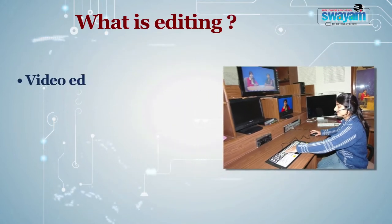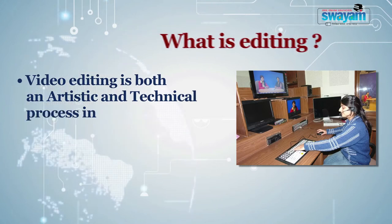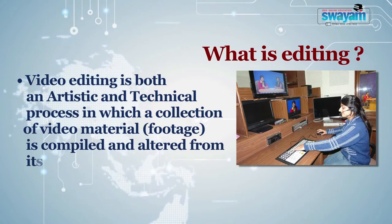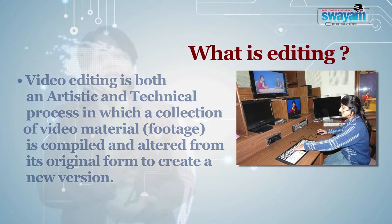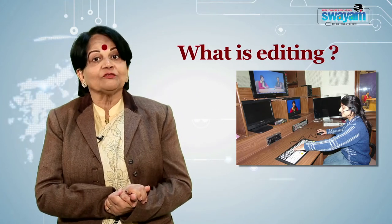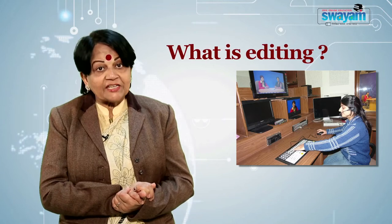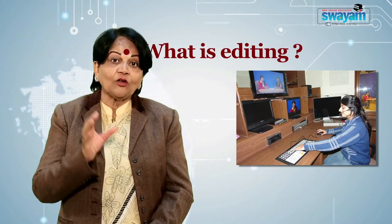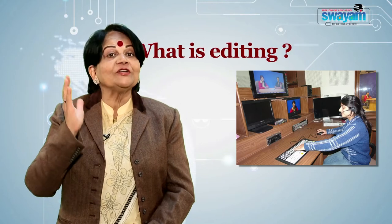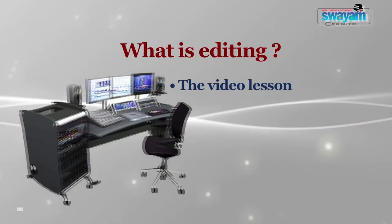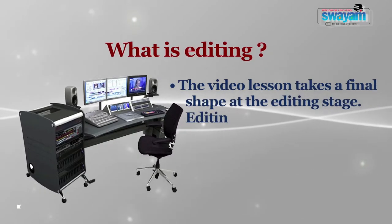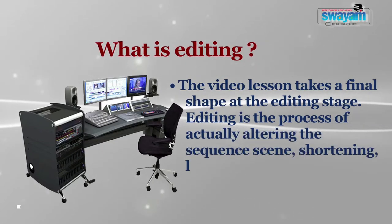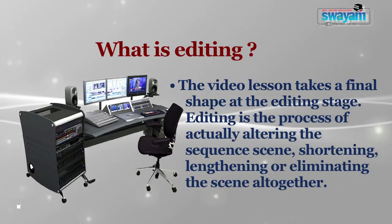So the question arises: what is editing? Video editing is actually both an artistic as well as a technical process in which a collection of video material is compiled and altered from its original form to create a new version. The artistic process consists of deciding what elements to retain, delete, or combine from various sources so they come together in an organized, logical, and visually pleasing manner. The video lesson makes its final shape at the editing stage.